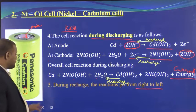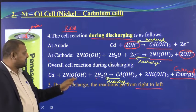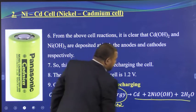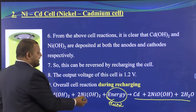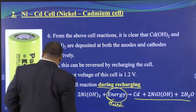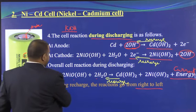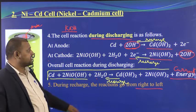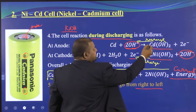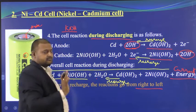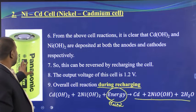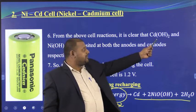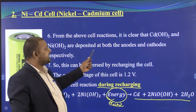The reactants convert into products during discharging, and the products convert back into reactants during recharging. This is the discharge reaction and this is the recharge reaction. Instead of writing it twice, you can simply write it as one equation with a double arrow: the forward direction is discharge and the backward direction is recharge.